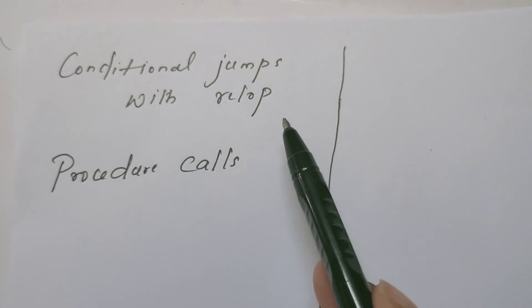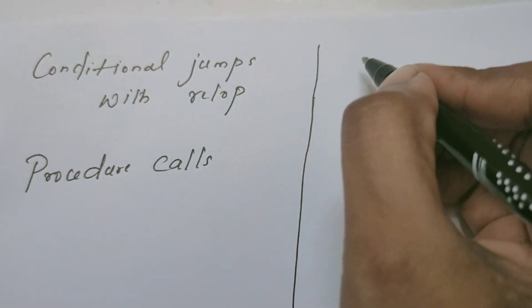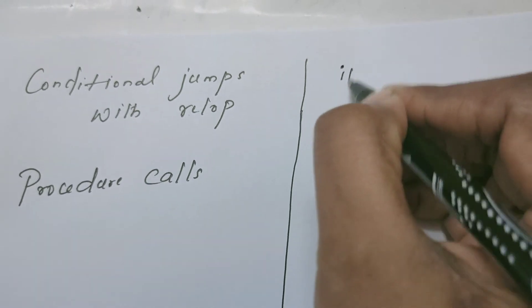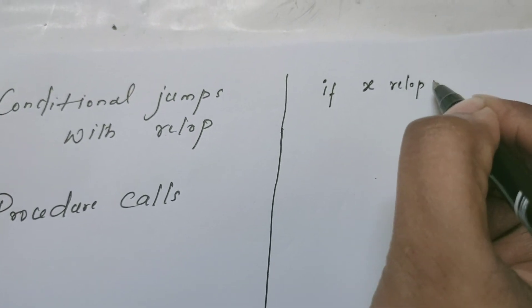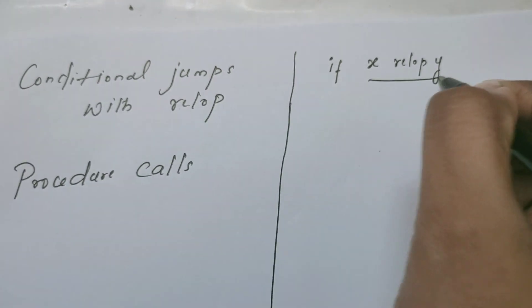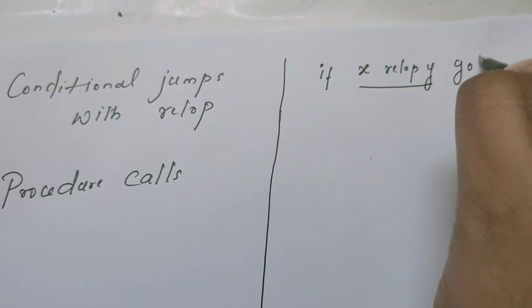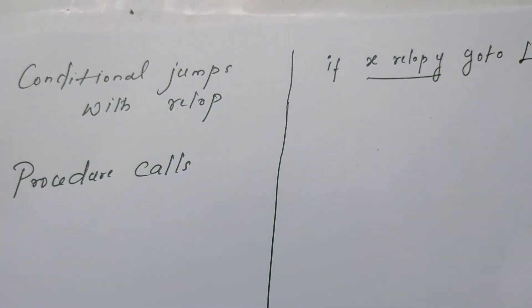Now let us see some more statements in programming languages. Suppose there are conditional jumps which have a condition with a relational operator. How do we write that? If x relational operator y, this is the condition, then go to label. L stands for the label.